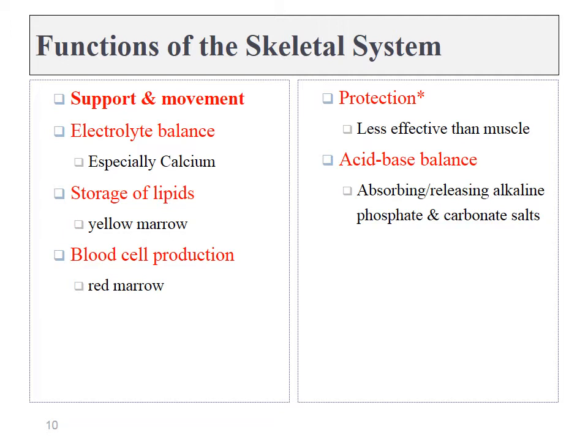One of the main functions of the skeletal system is support and movement. As muscles contract, they pull on bones, allowing us to move around. Bones are also a very important calcium reserve. It's tricky to store calcium — it's a little bit of a dangerous electrolyte — so having a safe place to keep it stored is important. Bone tissue can also store fat, and it's the site of our bone marrow where all of the blood is produced.